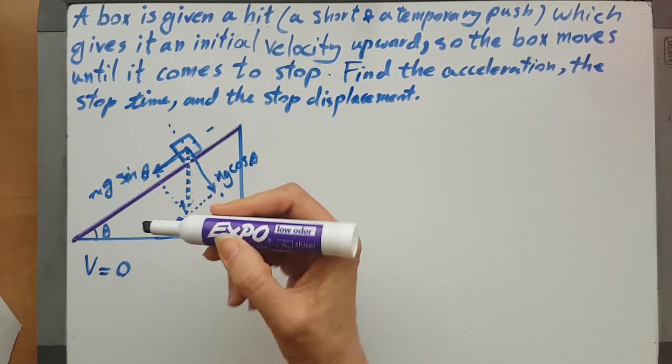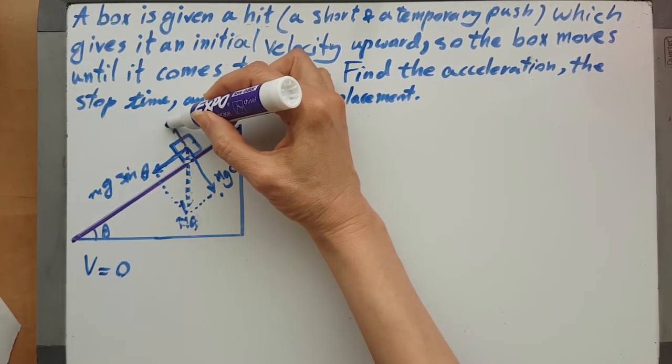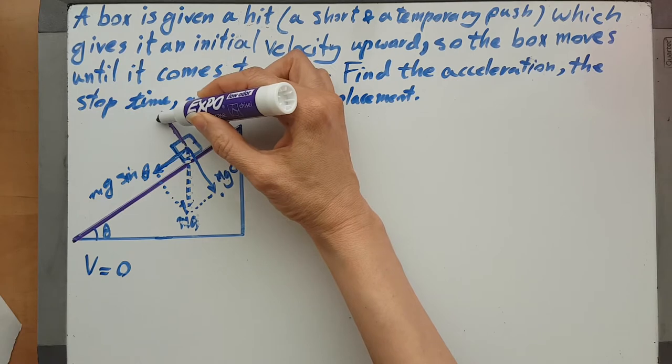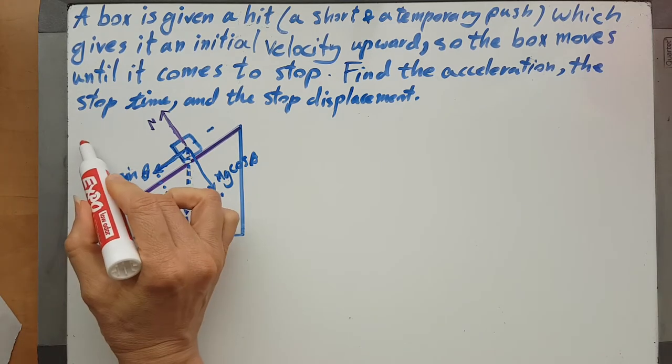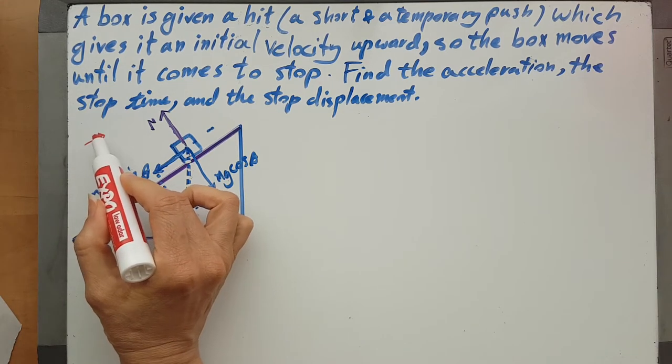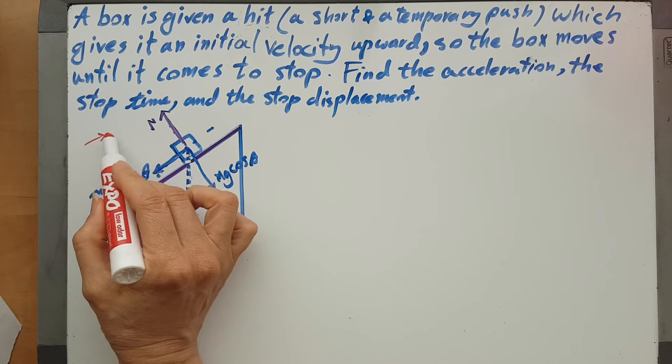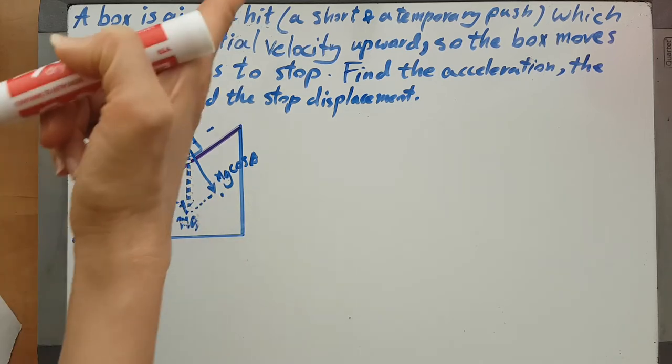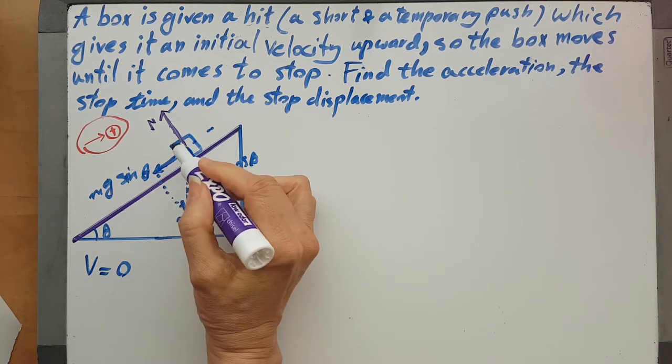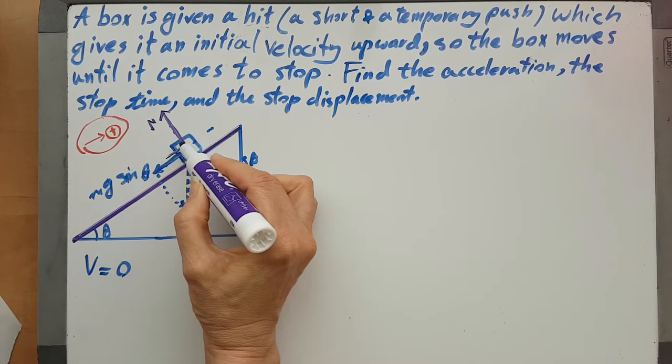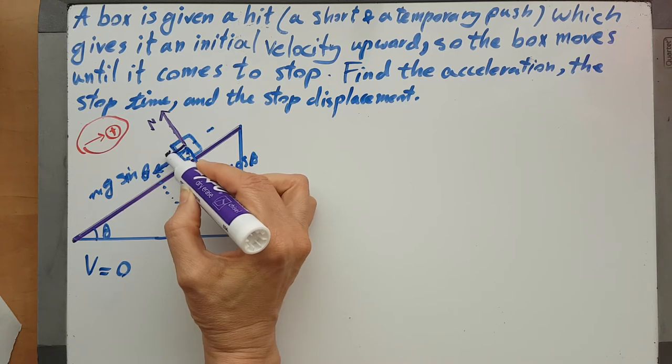This is obviously the N. And pay attention to this - the movement is in this side. This is the movement side, right? So positive is this way. And the f of friction would appear this way - this is the f of friction.